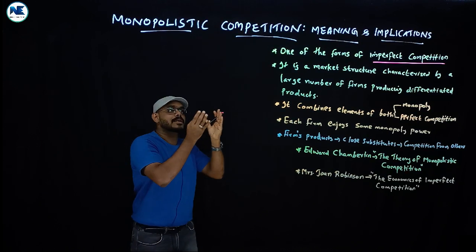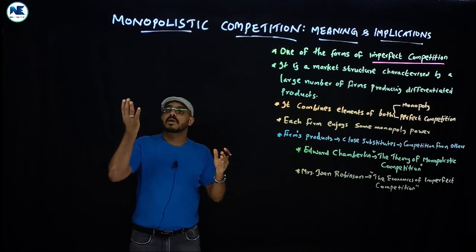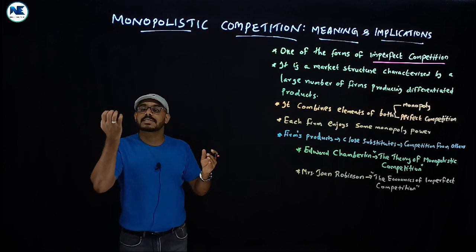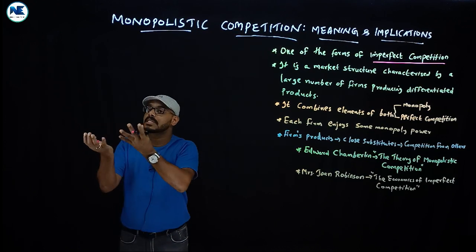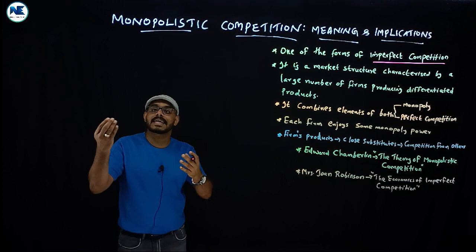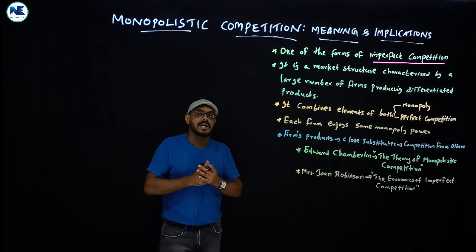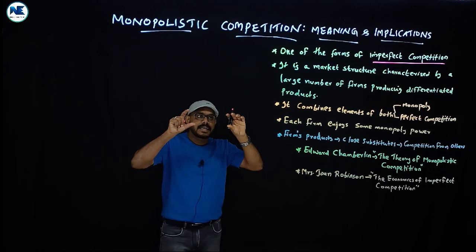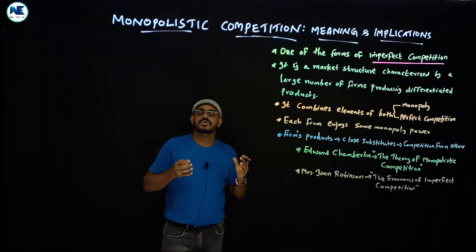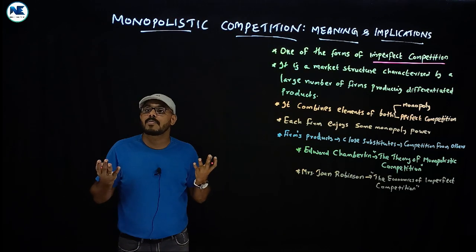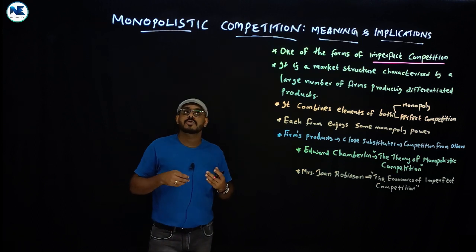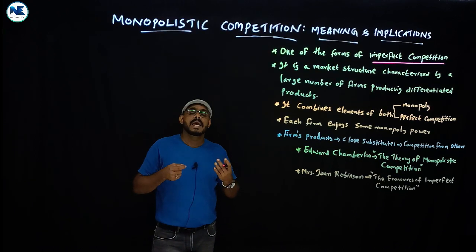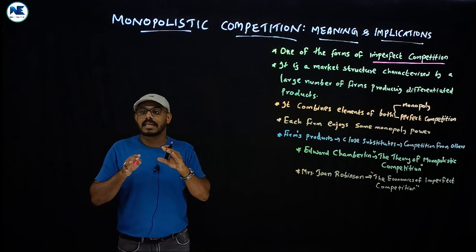Under perfect competition a firm or seller is the price taker, there is a homogeneous product, and free entry and exit. The classical theory of price or price determination is basically based on perfect competition, with some exceptions like the duopoly model.